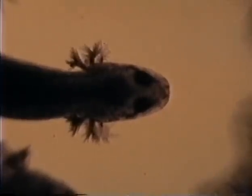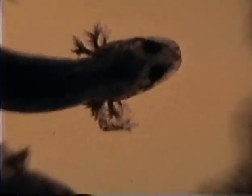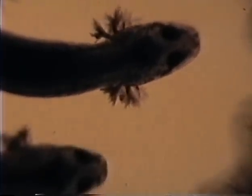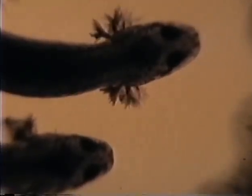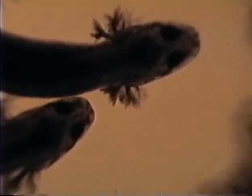Cilia are also employed by the gills of fish, oysters, and in this case young salamanders, to create water currents over the gill surface. The flow created in the water improves gas exchange.